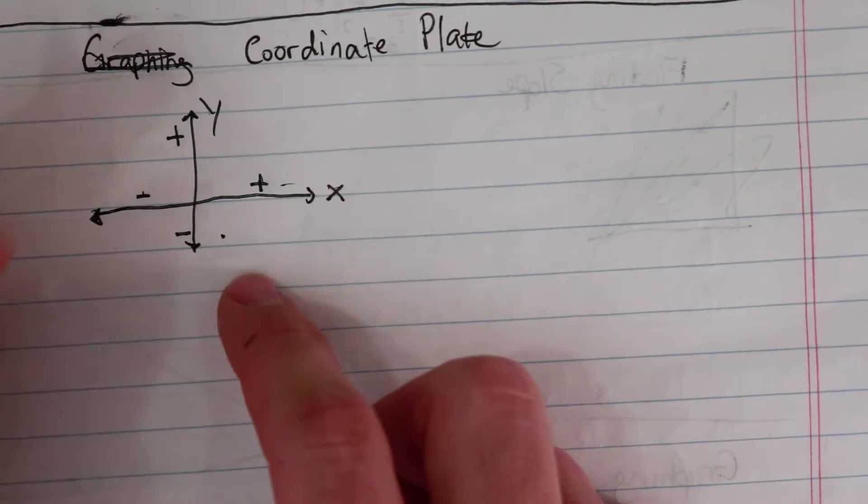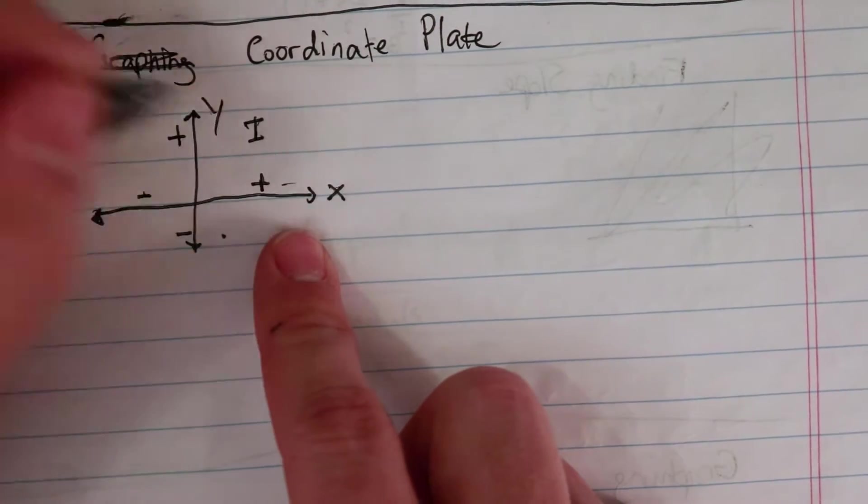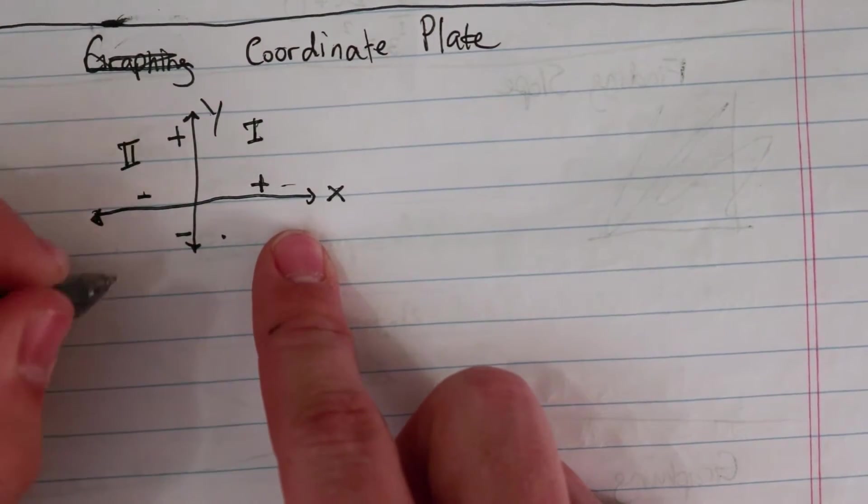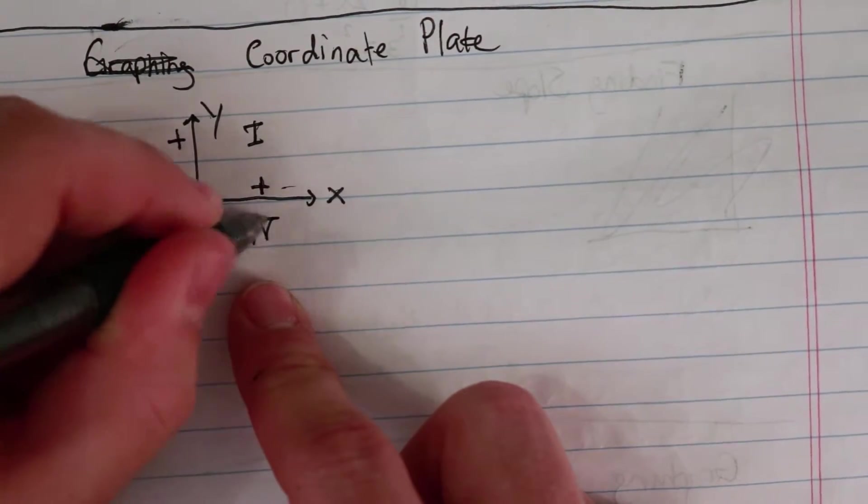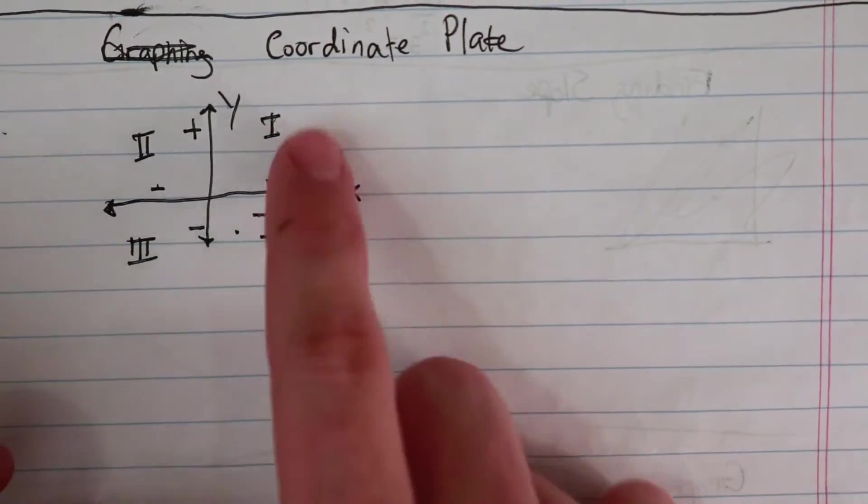So positive, positive, negative, negative. So this is called quadrant one, this is quadrant two, this is quadrant three, denoted by numerals, and then this is quadrant four. That's how they're named, they go around like this.